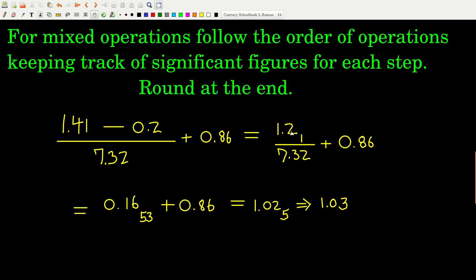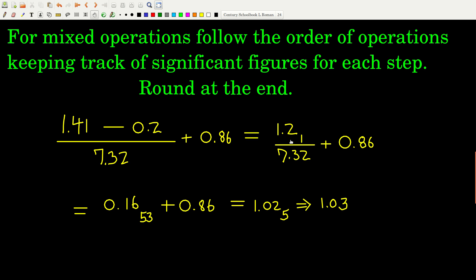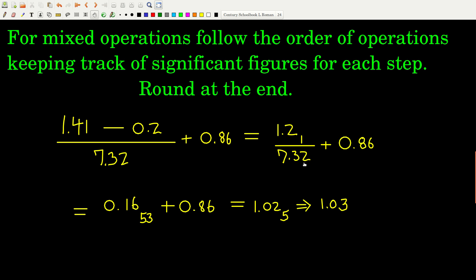So because we're doing division now, the rule is whichever number has the least number of significant figures, that's how many sig figs we're allowed to keep. Well, the top number has 1, 2 significant figures. The bottom has 1, 2, 3. So we're allowed to keep 2, and so we keep 0.16, and our first, I kept the first 2, .53 here.